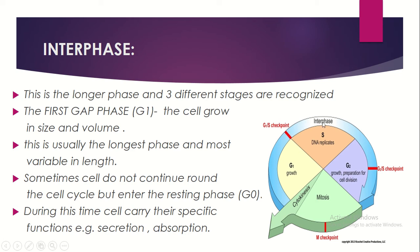If a cell cannot divide properly, it may enter the G0 resting phase after DNA replication or during G2 preparation for cell division. The cell may be damaged and exit the cycle at any stage. During the G0 resting phase, cells continue to carry out their specific functions such as secretion and absorption.